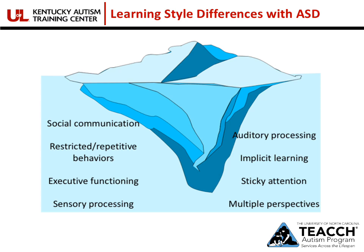With implicit learning, neurotypical adults have picked up on things over the years by watching those around us. Students with autism will probably need more explicit instruction to know specifically what to do and not do. They may also have what's called sticky attention, where they have a difficult time disengaging from a task and shifting to another, and they may have difficulty understanding the perspectives of others — understanding that people have different thoughts and beliefs.